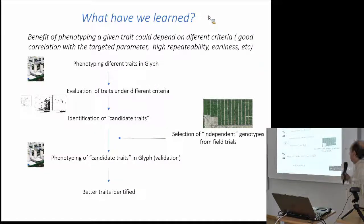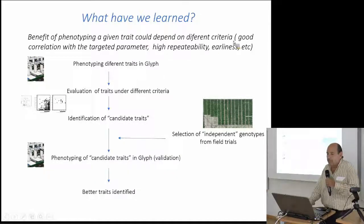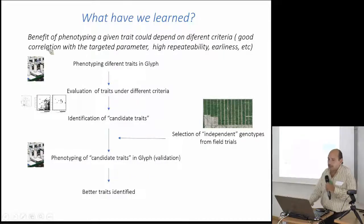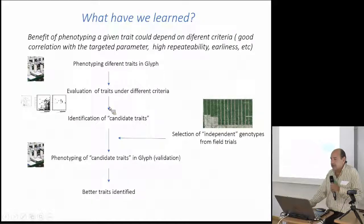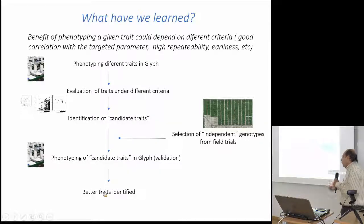For instance, when selecting a trait at our center, the benefit of a phenotyping trait can depend on different criteria, not only the cost of measuring it — for instance, a good correlation with the target parameters, high repeatability, earliness, and how early it could be measured. So we phenotype different traits in our platform, evaluate them under different criteria, identify candidate traits that perform well under these criteria, and select from independent genotypes from field trials.